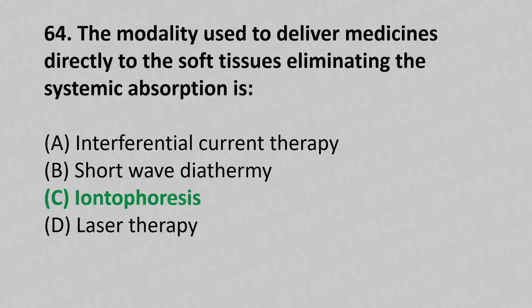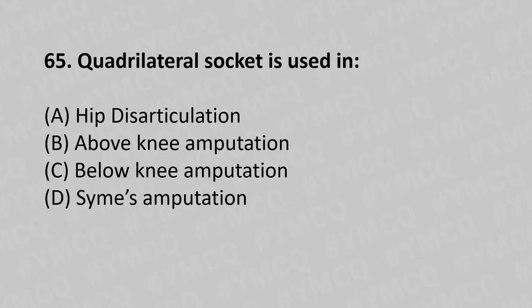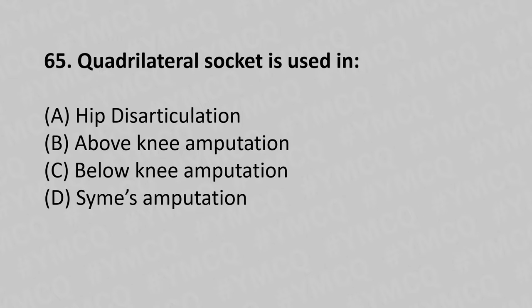Moving to our 65th question. Quadrilateral socket is used in: Option A, Hip disarticulation; Option B, Above knee amputation; Option C, Below knee amputation; Option D, Symes amputation. And the answer is Option B, Above knee amputation.